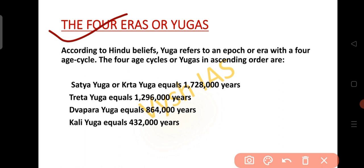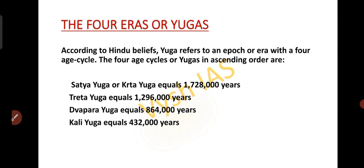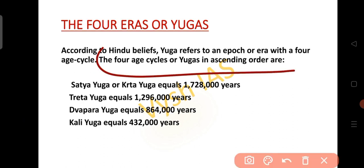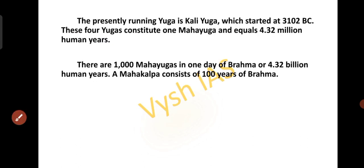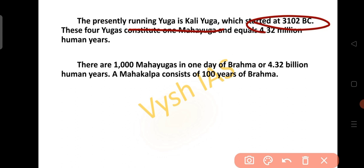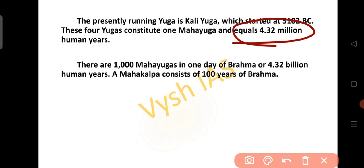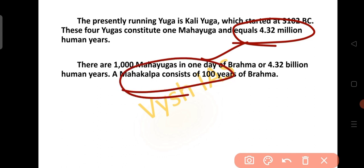Now let's see the 4 eras or Yugas. According to Hindu beliefs, Yuga refers to an epoch or era with a 4-age cycle. The 4 age cycles are: Satya Yuga or Krita Yuga, equal to 17 lakh years; Treta Yuga, equal to 12 lakh years; Dvapara Yuga, equal to 8 lakh years; and Kali Yuga, equal to 4 lakh years. Presently we are running in Kali Yuga, which started at 3102 BC. These 4 Yugas constitute 1 Maha Yuga, equal to 4.32 million human years. There are 1000 Maha Yugas in 1 day of Brahma, and Maha Kalpa consists of 100 years of Brahma.